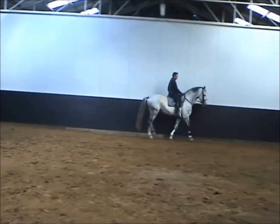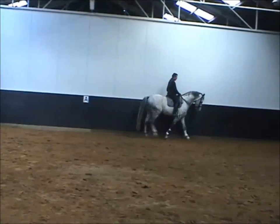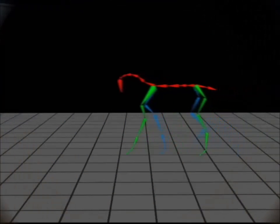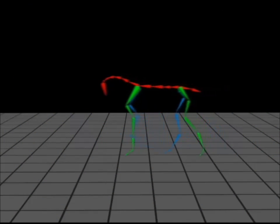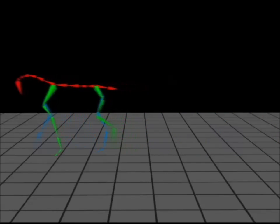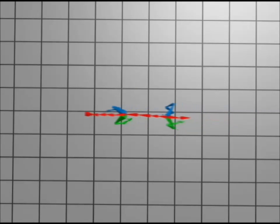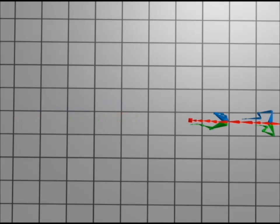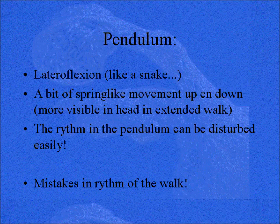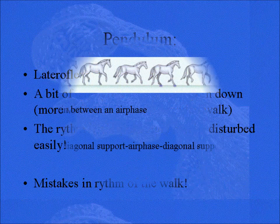The entire spine in the walk looks a bit like a snake — it moves a tiny bit sideways, it looks a bit up and down, and in the neck that's the most prominently visible. It's a very flexible spine. The stick figure shows you that a little bit, and you can see the up and down motion in the spine with the head from the sideways image. From the top image, you can see it also has a little bit of that lateral snake-like motion. It's really like a pendulum — it moves sideways, it's a bit of a spring movement. It's easy to disturb that rhythm, and then you get all kinds of problems in the walk.